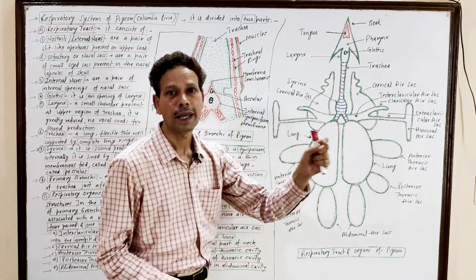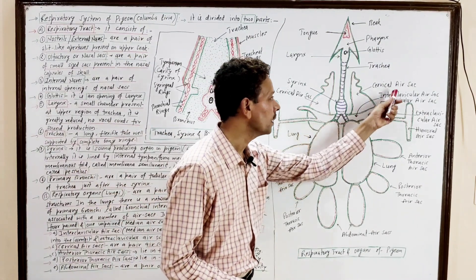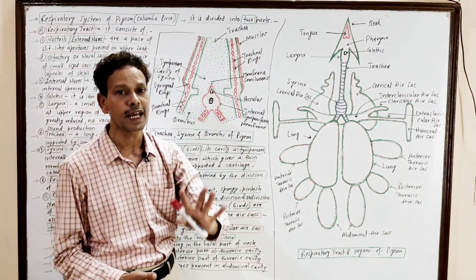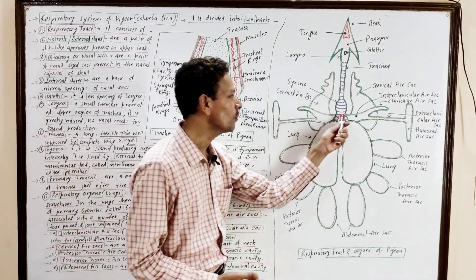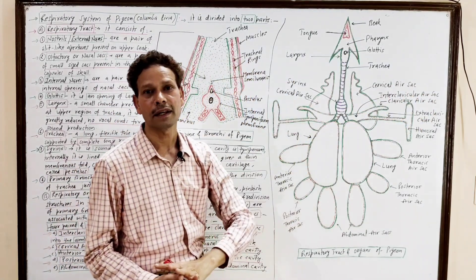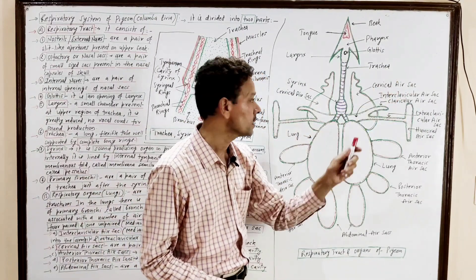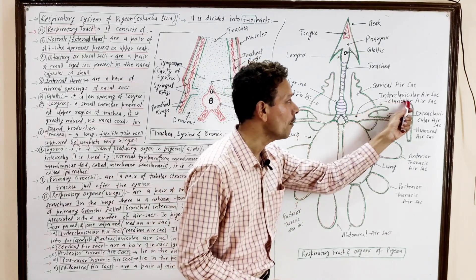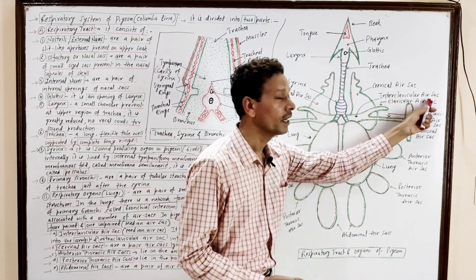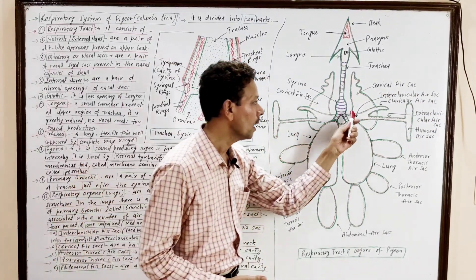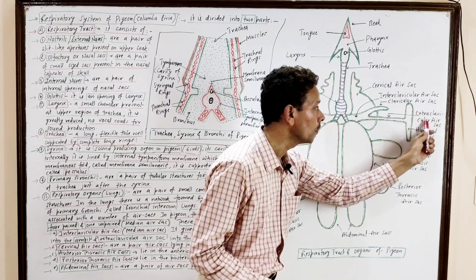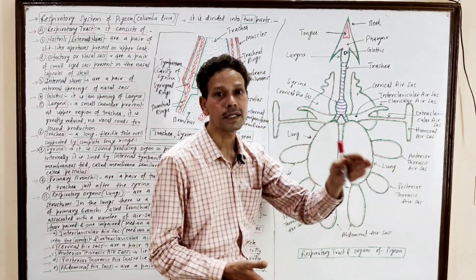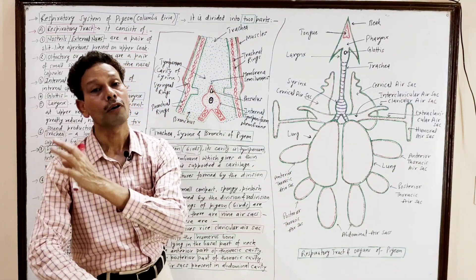The median air sac is the interclavicular air sac — it is unpaired. This is the only air sac which is unpaired. This interclavicular air sac gives two branches: one is the clavicular air sac in the armpits, and another branch is the extraclavicular air sac, which gives the humeral air sac in the humerus bone of the forelimb.